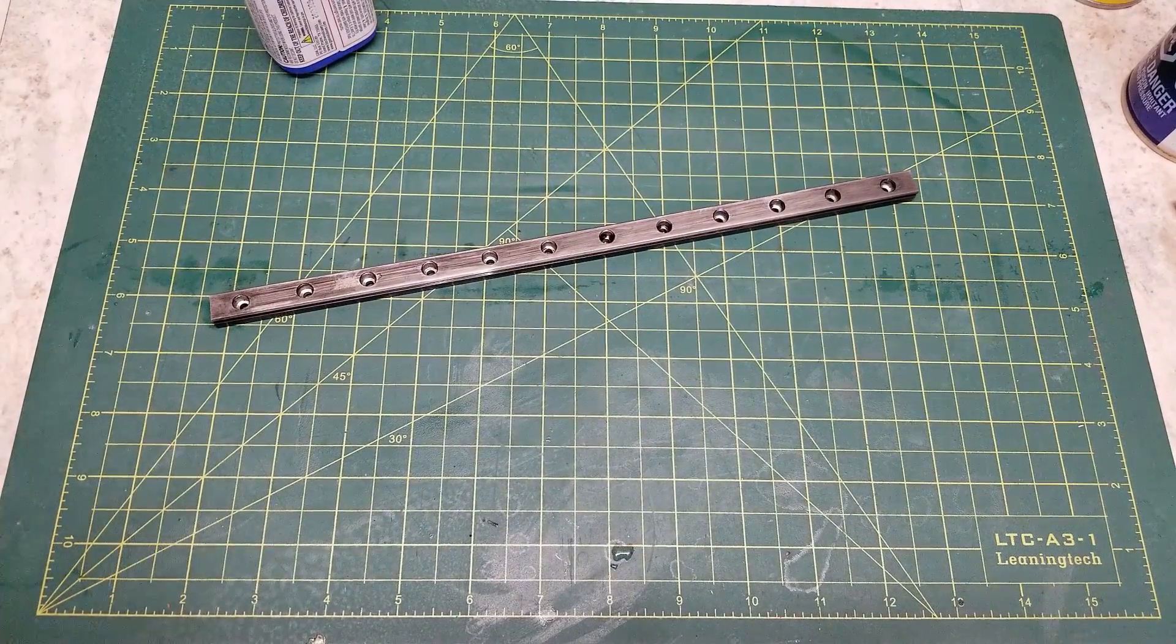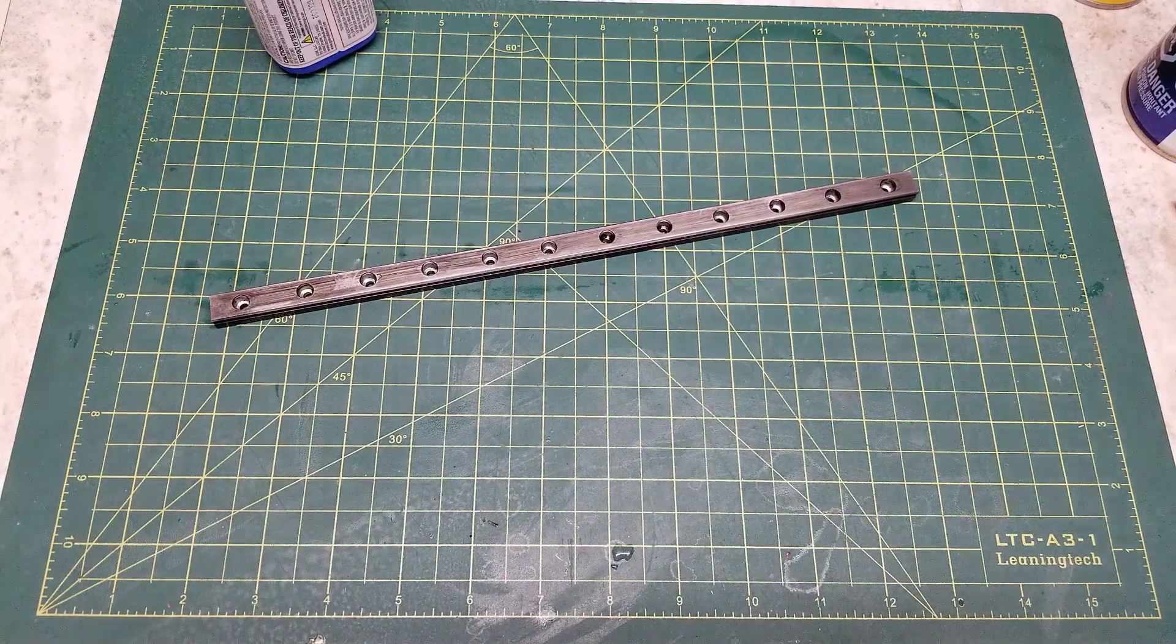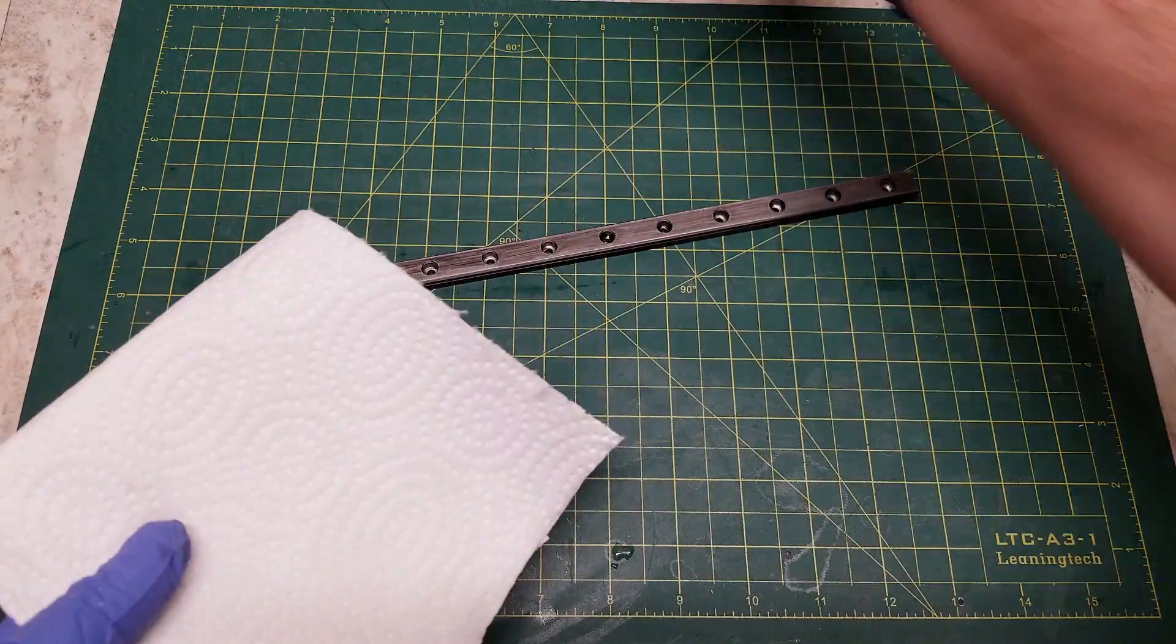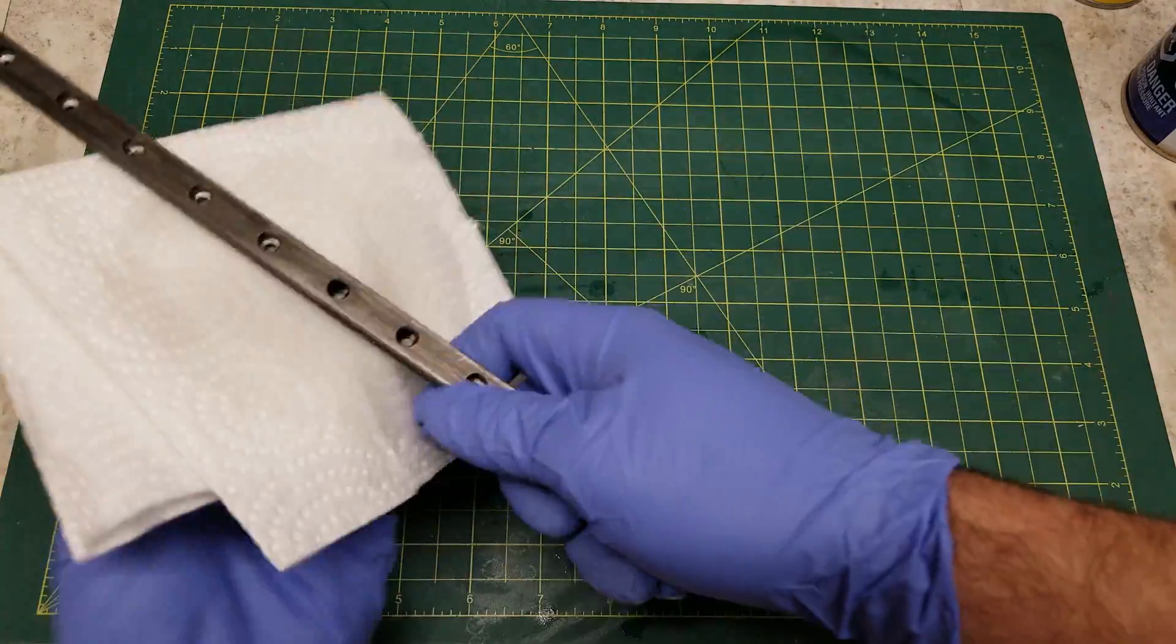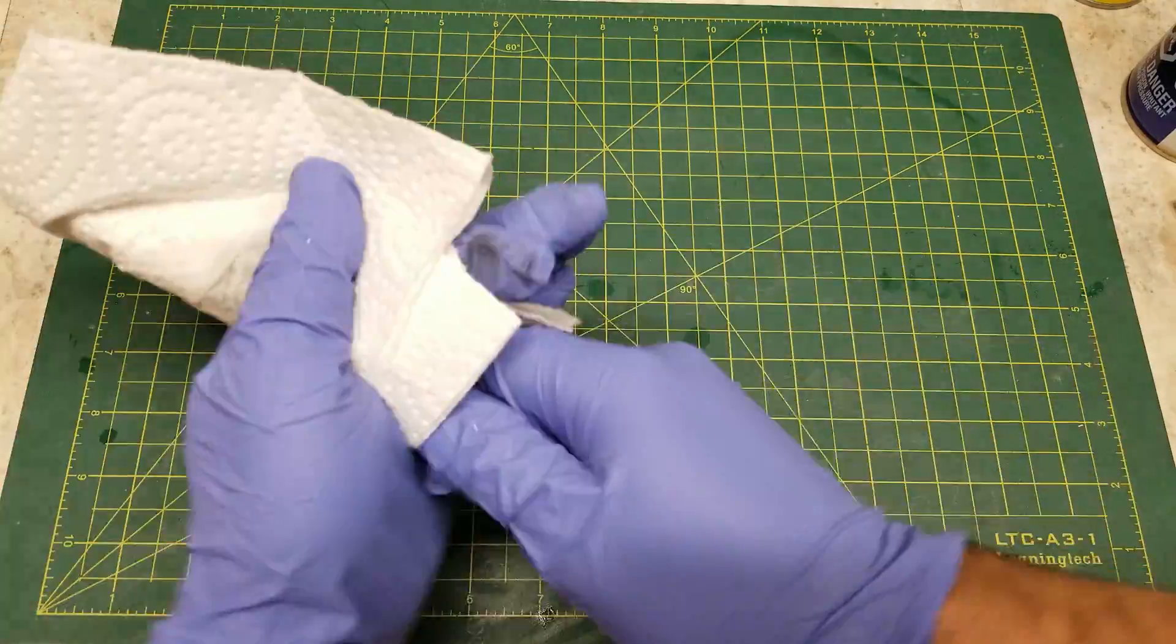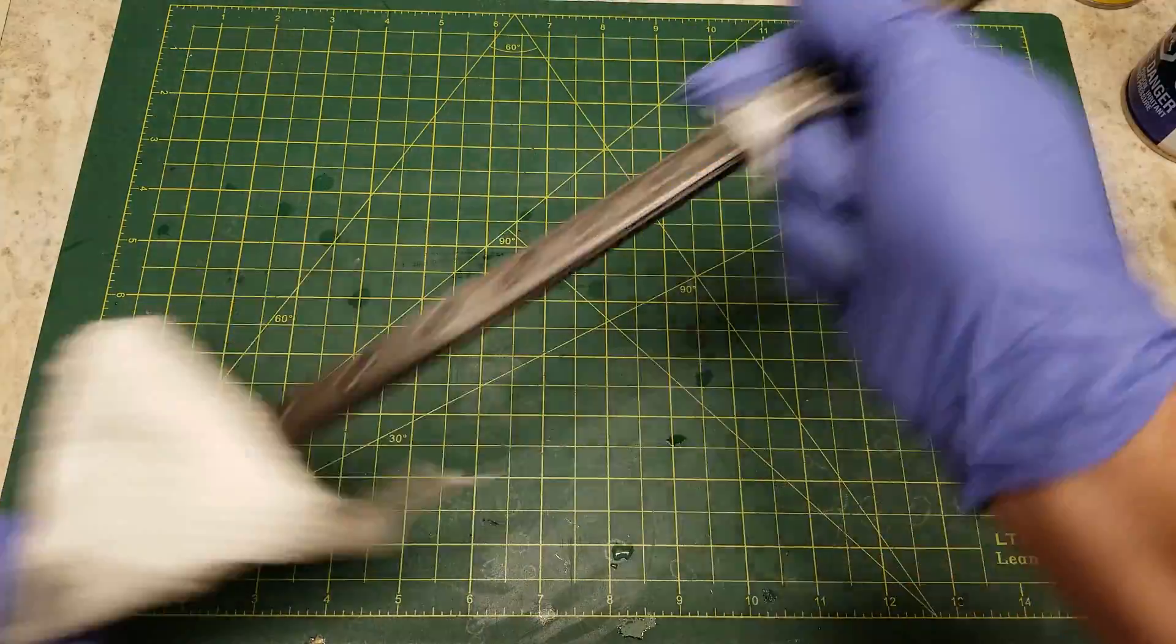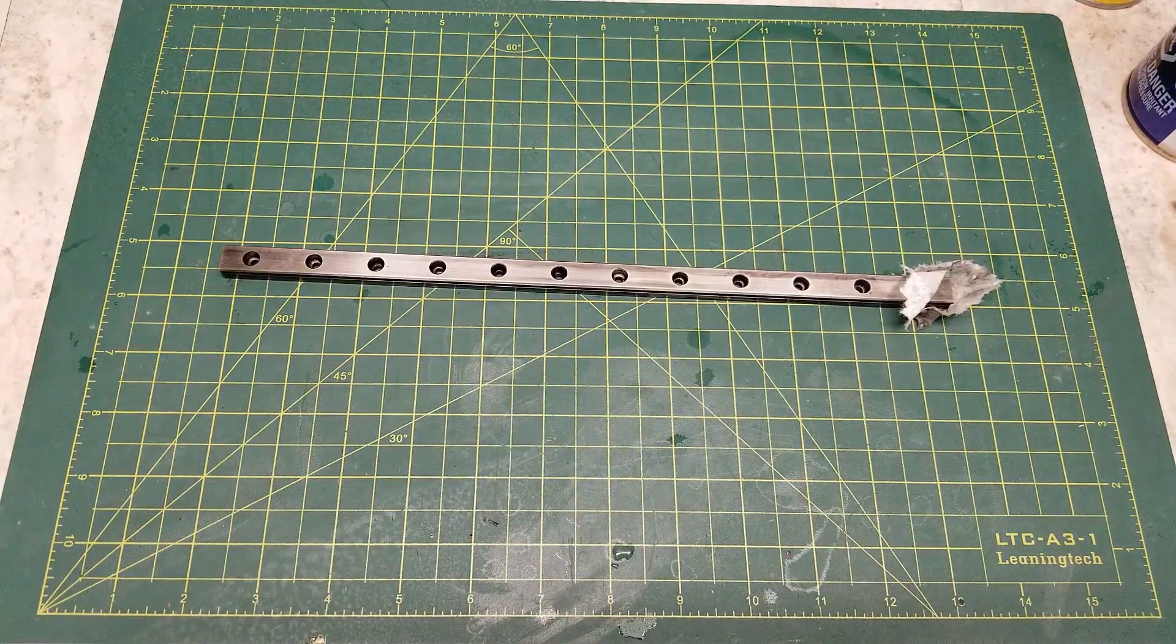And then afterwards using some isopropyl alcohol you're going to want to give the rail a wipe down. Now as you can see while it is called bluing it does leave a dark gray finish. And also as you can see this is not that dark. We are going to be repeating this process several times.